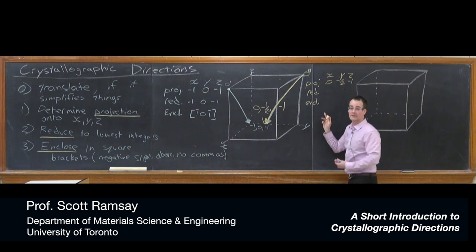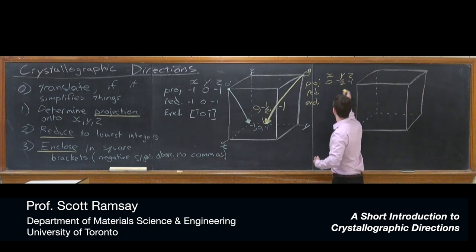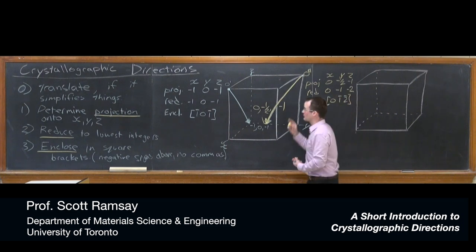The reduction we're going to do here then is going to clear that fraction. So we'll multiply across by 2, we've got 0, negative 1, and negative 2. And the enclosure then becomes 0, 1 bar, 2 bar. And that's what that vector is.